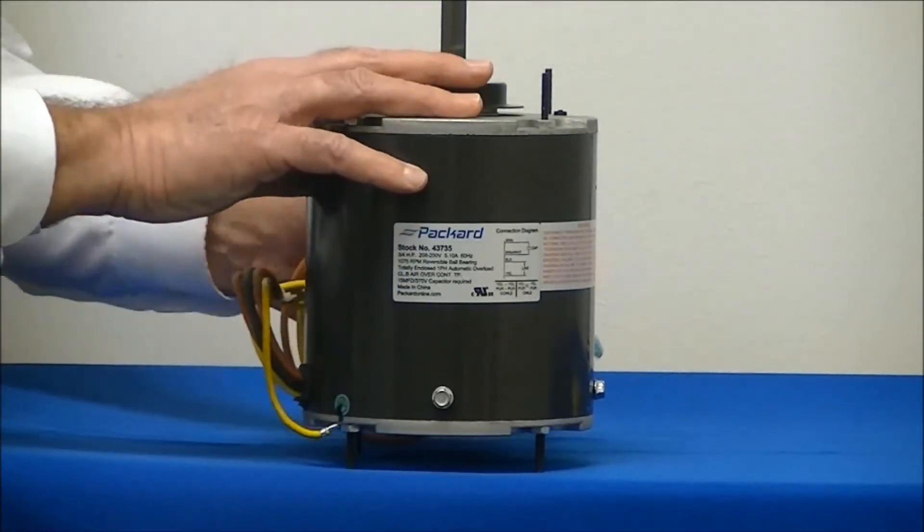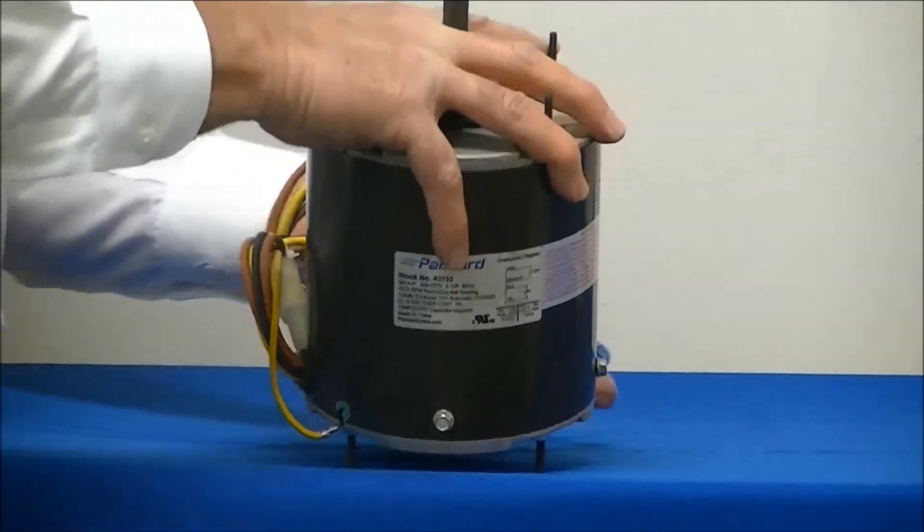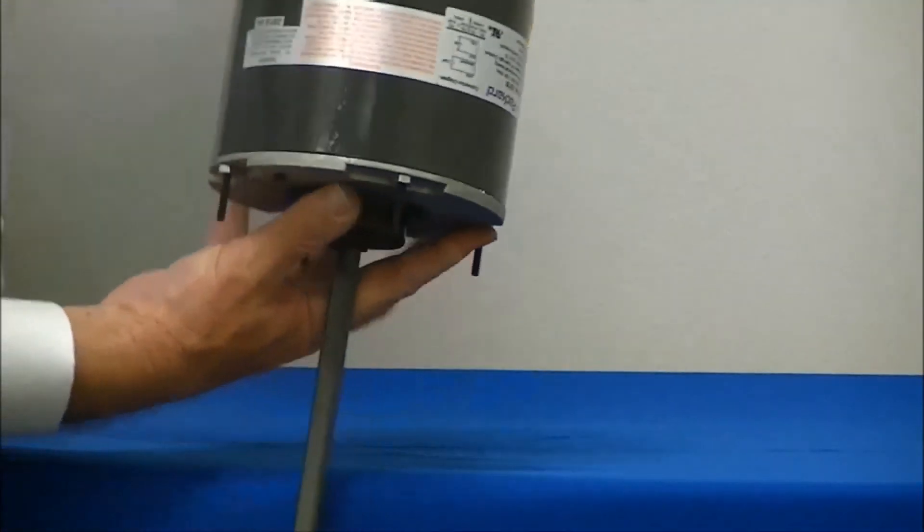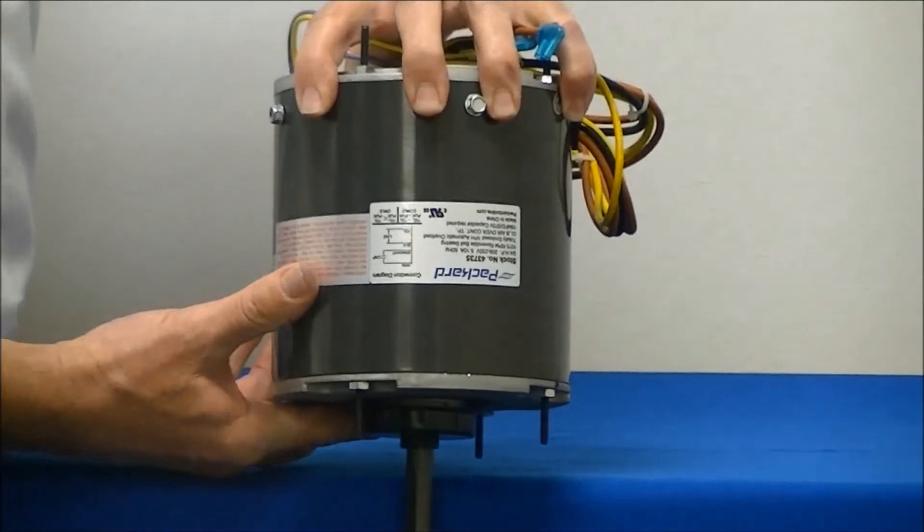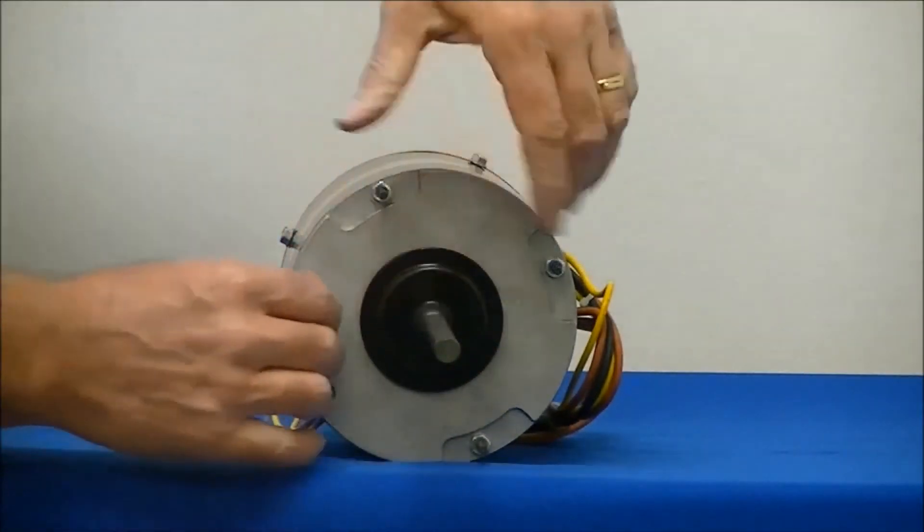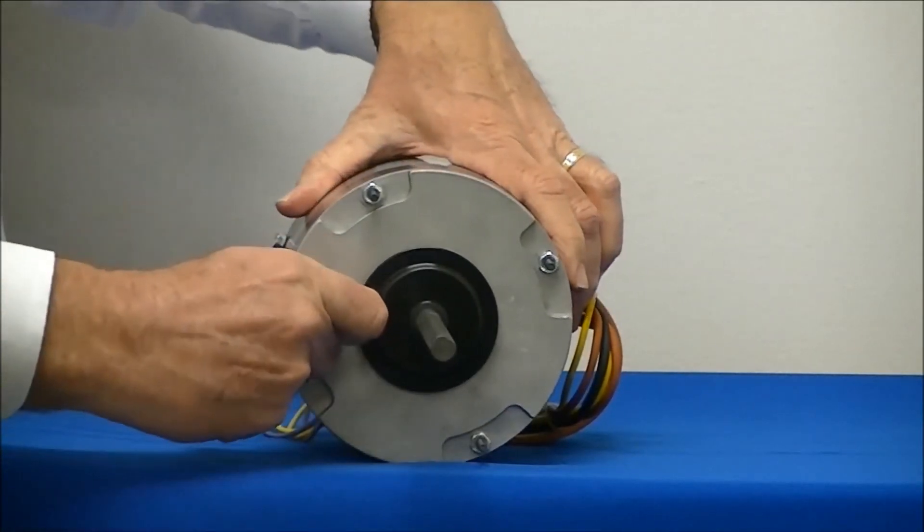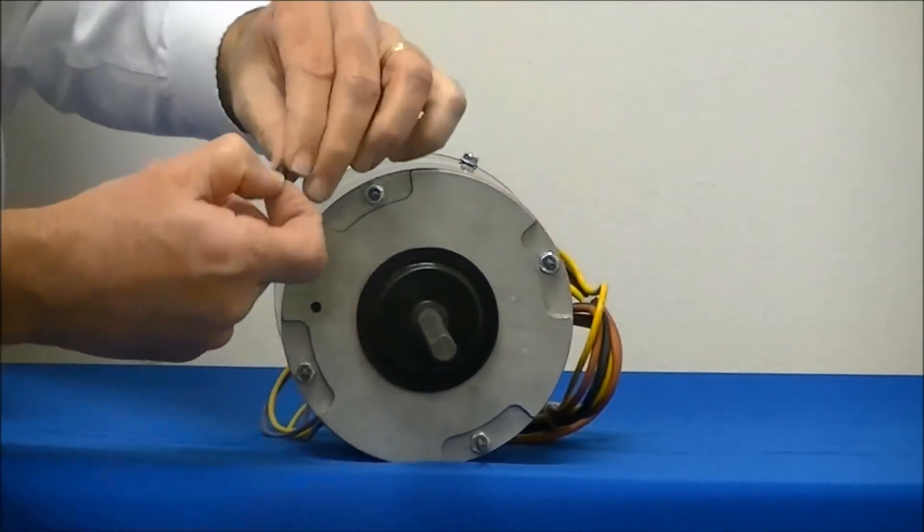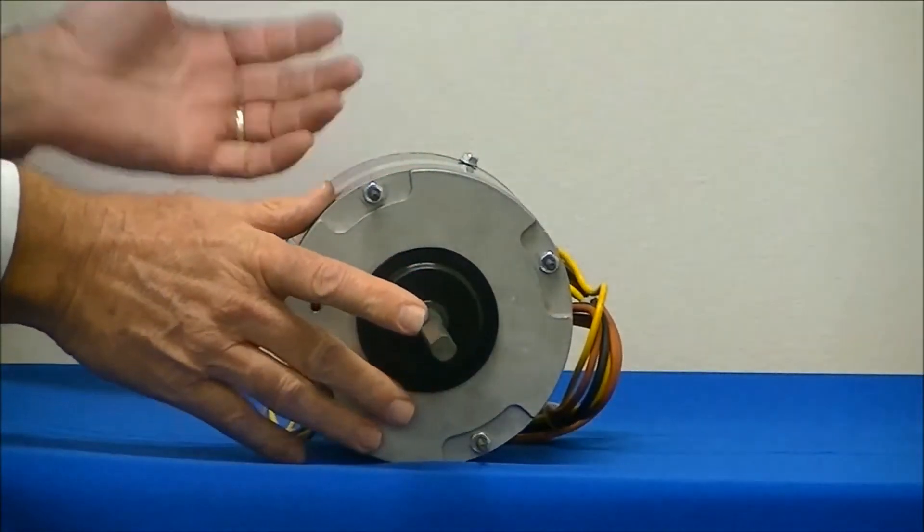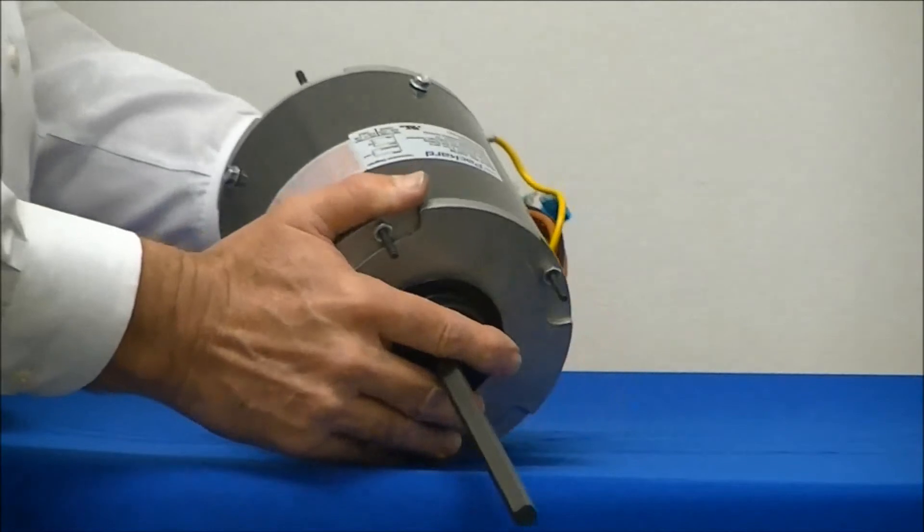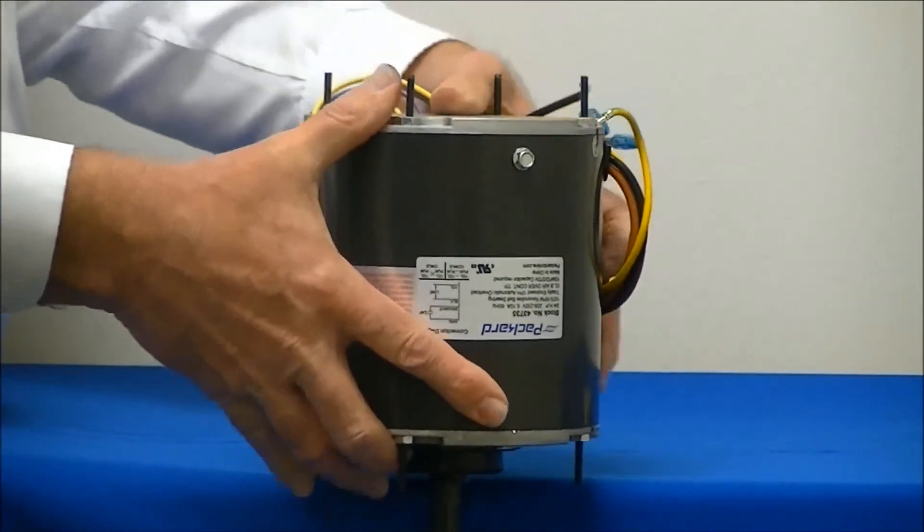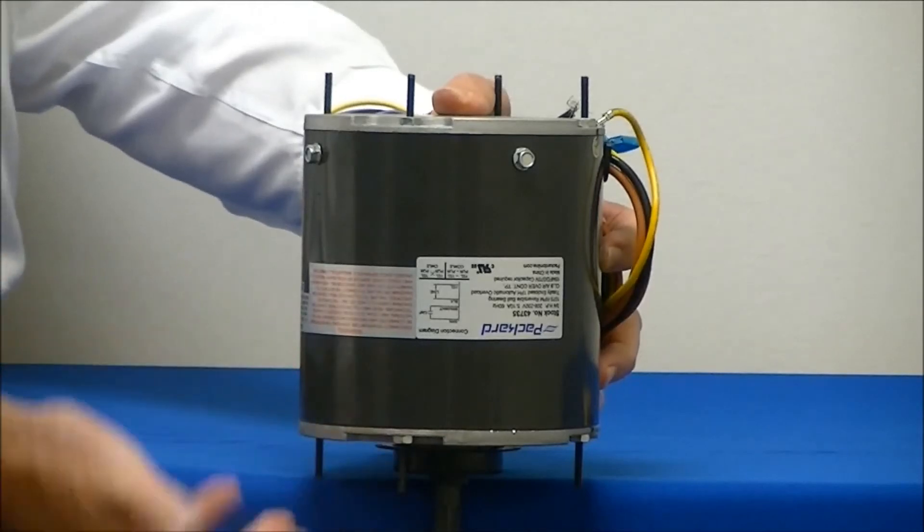Now if the motor is mounted shaft down, then this becomes the downside of the motor. So you remove the drain plug from this end of the motor. And again, just discard that. You would leave the drain plug in the upside of the motor again so rain won't get into it. By having that plug removed, now the condensation will drain out of the motor.